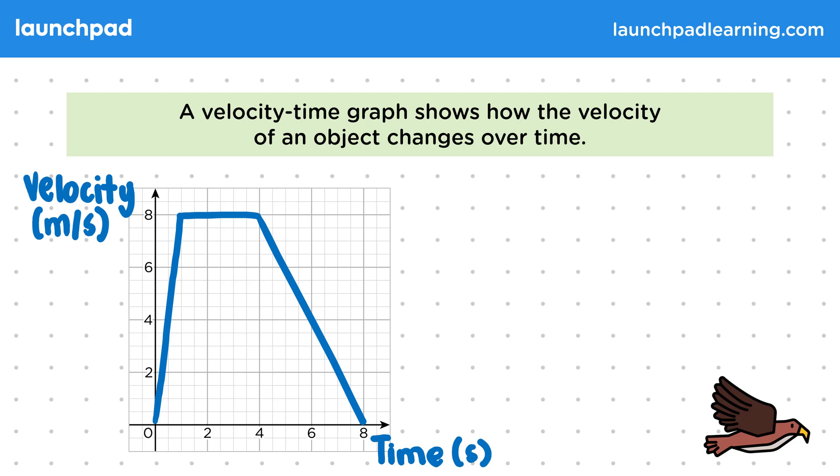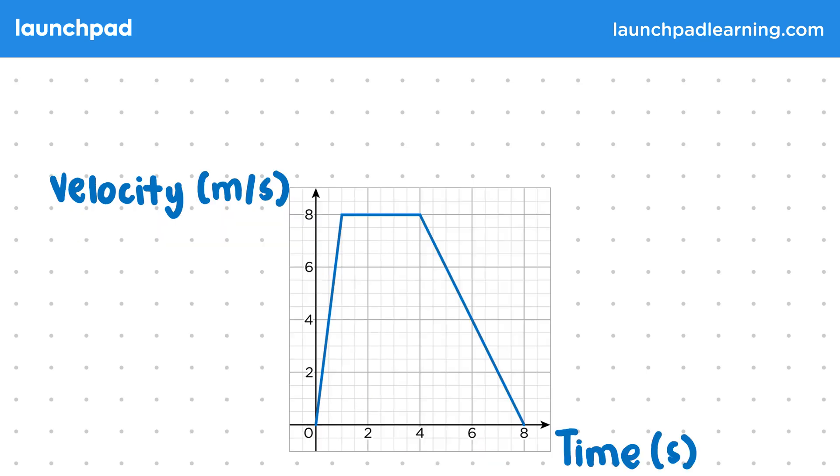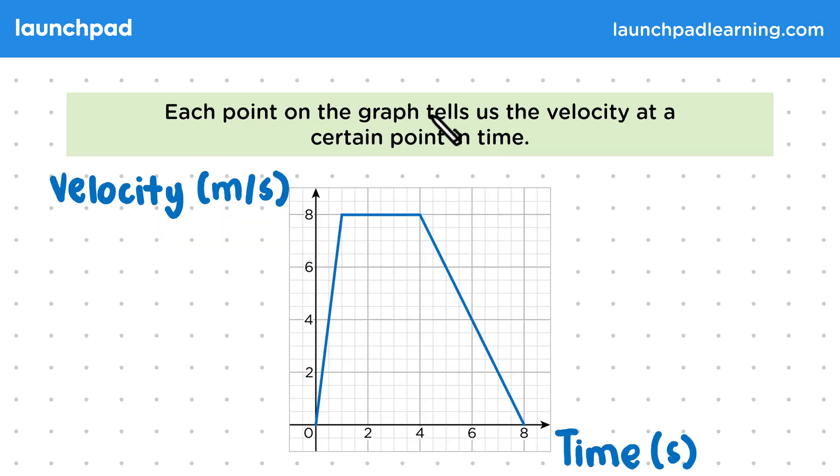Let's take a closer look at the graph we've just made. What does each point on the graph represent? Each point on the graph tells us the velocity at a certain point in time. This is the same as reading the x value and the y value for a point on the graph, as these are the time and velocity respectively.